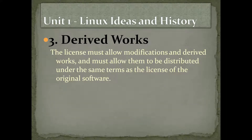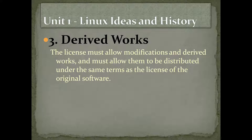Third one: derived works. The license must allow modifications and derived works, and must allow them to be distributed on the same terms as the license of the original software. That means for my media player, you can take it, derive from it, take some ideas or the entire source code, add things to it, and redistribute that new modified software under the same license that I used.